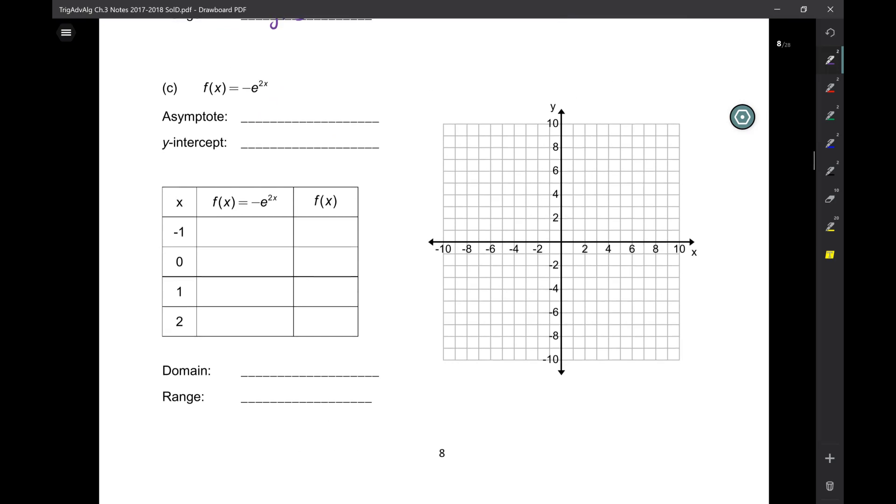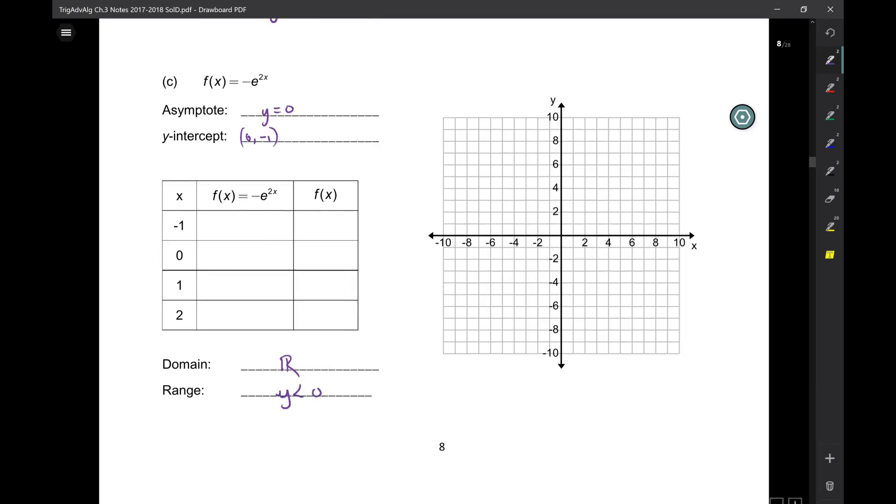So the next one, before you graph, let's just work with me on this for a minute. What's the asymptote, 0. What's the y intercept, negative 1. So 0 comma negative 1. And then here, what's the domain, all reals. And what about the range? Are you sure about that? y is less than 0 because there is a negative out front. So now graph it, I'll pause this for a few minutes again for this one.